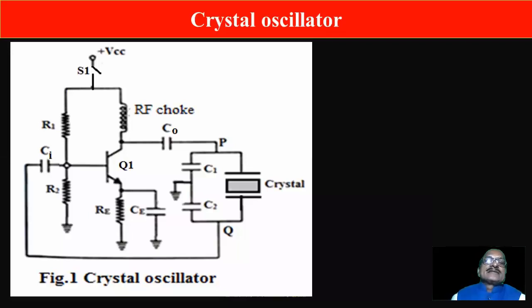Now the next one is crystal oscillator. This is again a high frequency oscillator because if you consider the crystal oscillator, its equivalent circuit consists of inductance and capacitor. This is just like an LC circuit.